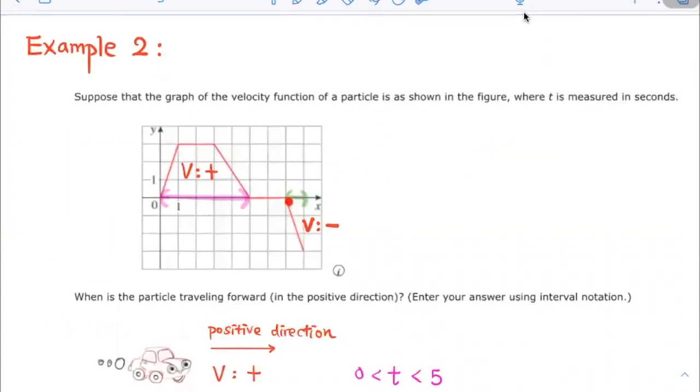we see that this part of the graph is below this x-axis, and this is the graph for the velocity function. So velocity is negative over here on this time interval from 7 to 8.